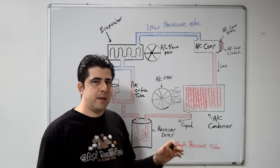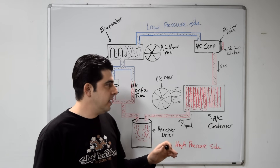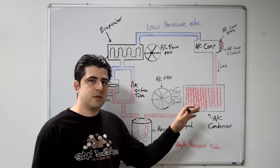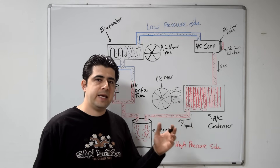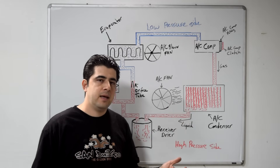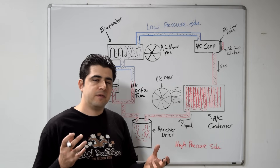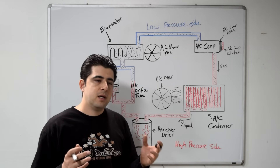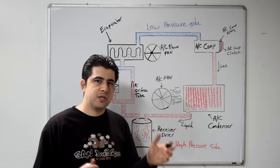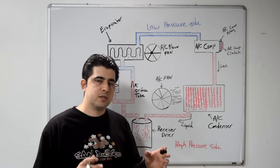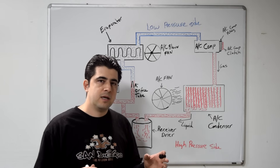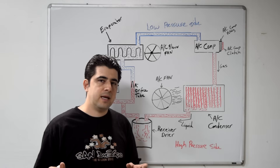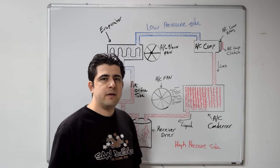Your AC system works by basically manipulating the refrigerant within the system. It cycles the refrigerant between a liquid and a gas state, and as the refrigerant goes from liquid to gas and vice versa, it uses the temperature difference of the refrigerant in those different states to lower the temperature inside the passenger cabin.